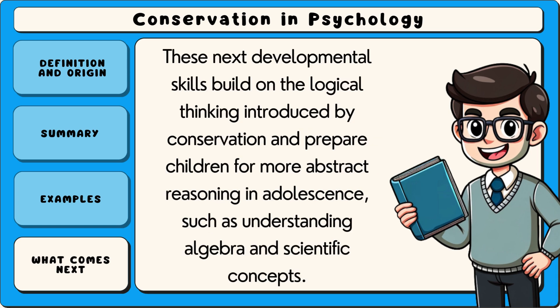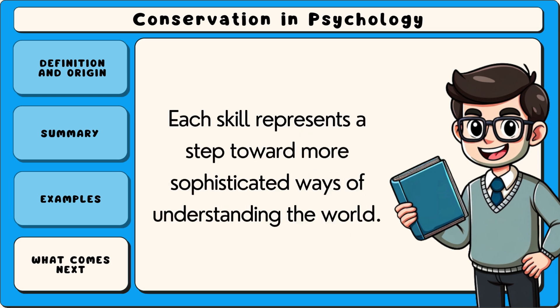These next developmental skills build on the logical thinking introduced by conservation and prepare children for more abstract reasoning in adolescence, such as understanding algebra and scientific concepts. Each skill represents a step toward more sophisticated ways of understanding the world.